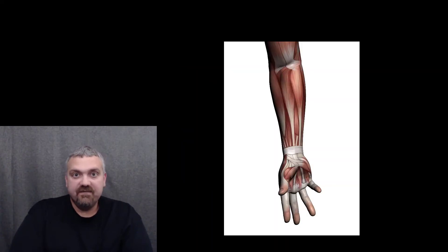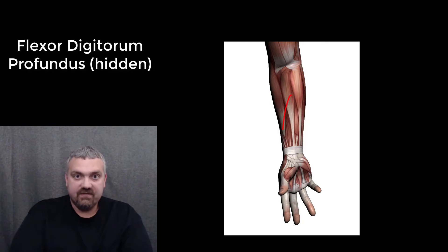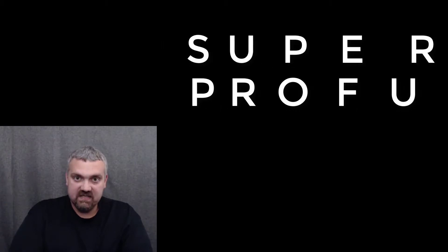Key examples here, the flexor digitorum superficialis muscle is closer to the surface and laying on top of the flexor digitorum profundus muscle, which is deeper. Superficial versus deep, profundus.